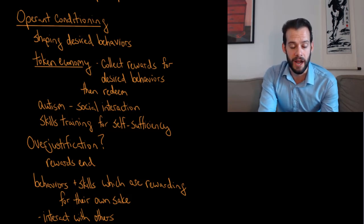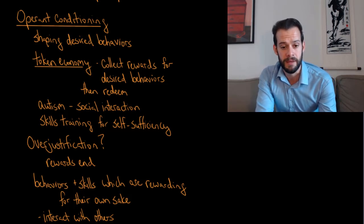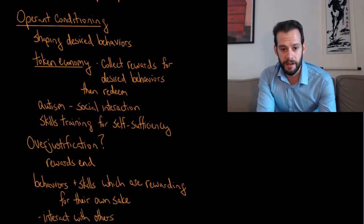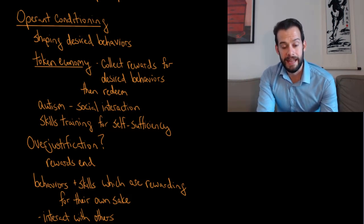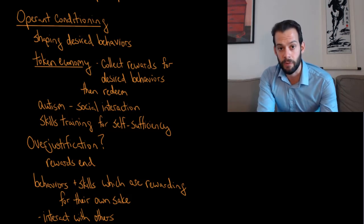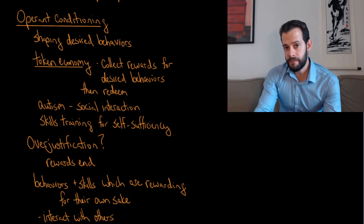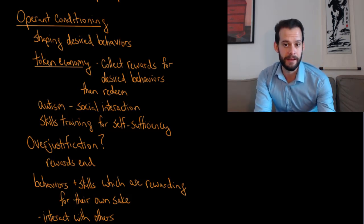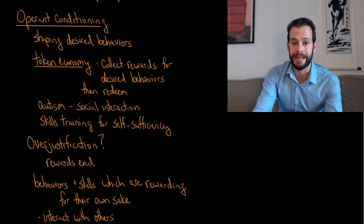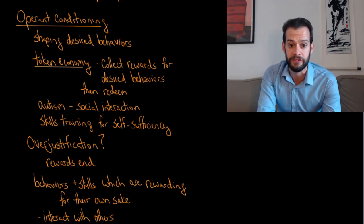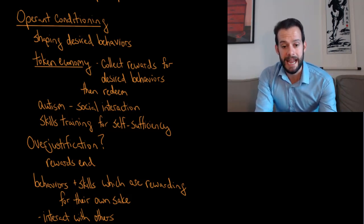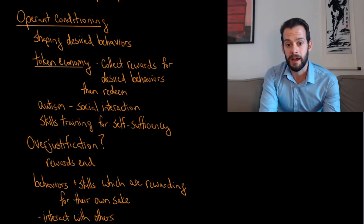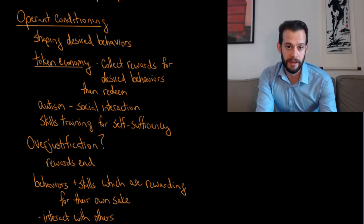For example, if a child has autism, they might avoid certain types of social interaction. If they engage in those social interactions, they get a token or some sort of reward. Once they build up, say, 10 of these rewards, they can redeem them for something like watching their favorite movie or engaging in their favorite activity. This encourages them to keep engaging in social interaction, meaning they develop more social skills and greater competence over time.